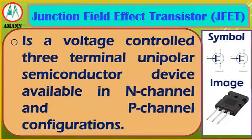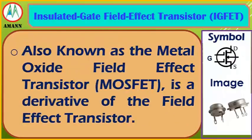Junction Field-Effect Transistor (JFET): a voltage-controlled 3-terminal unipolar semiconductor device available in N-channel and P-channel configurations. Insulated Gate Field-Effect Transistor (IGFET), also known as the Metal Oxide Field-Effect Transistor (MOSFET), is a derivative of the Field-Effect Transistor.